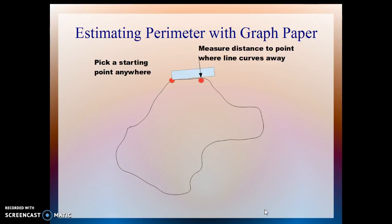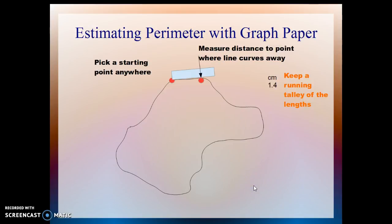You then take your ruler and measure as close as possible a straight-line distance to a point where the line begins to curve away from your ruler's straight line — you can see that's about here for our first point. Of course you write down the number of centimeters that the distance is, and you keep a running tally of the lengths on your calculator or on a piece of paper.